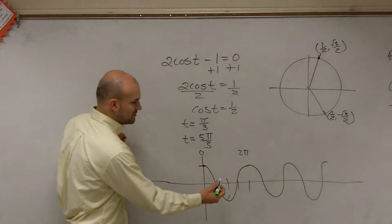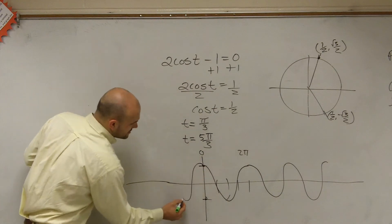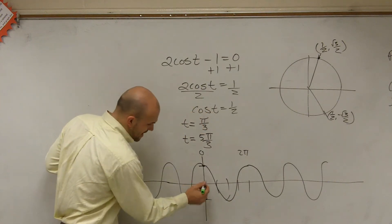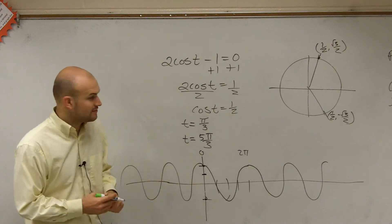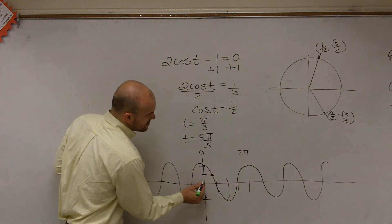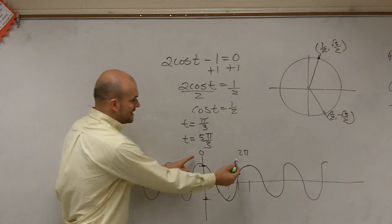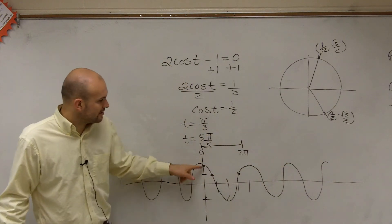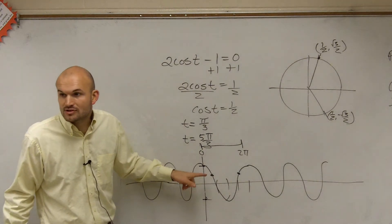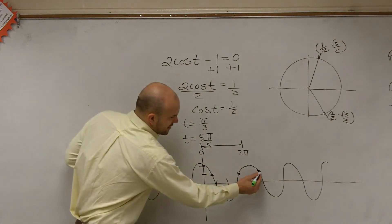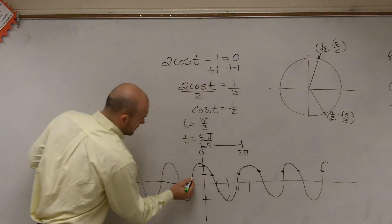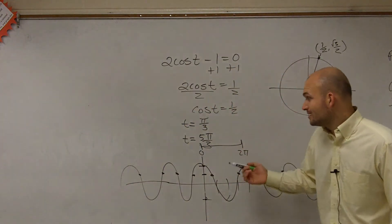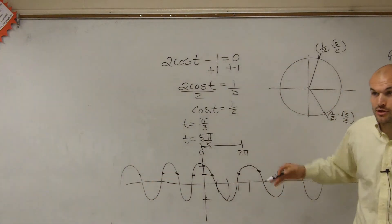Ladies and gentlemen, this graph goes on and on forever. So when cosine equals 1/2, we said there are two answers — π/3 and 5π/3 — on the interval of 0 to 2π. However, if you look at the whole graph, those are not the only solutions. You're going to have solutions here, here, here, here — many places. So if I don't put a restriction of 0 to 2π, we're going to have infinitely many solutions, because the cosine graph keeps on going.